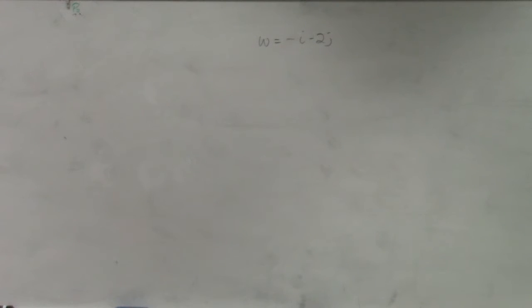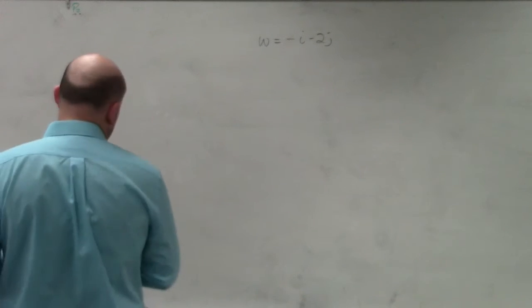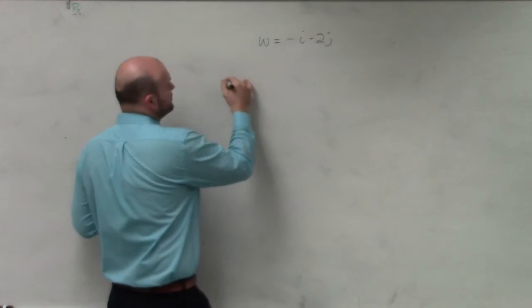What we're asked to do is w equals negative 1 minus 2i, and they're asking us to find the unit vector u.